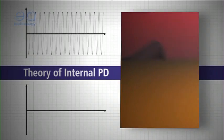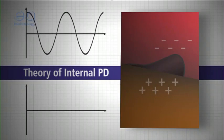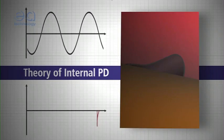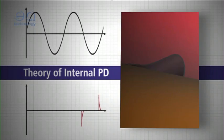PD activity can occur at any point in the insulation system where the electric field strength exceeds the breakdown strength of that portion of the insulating material.